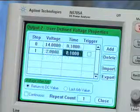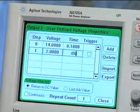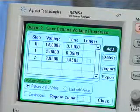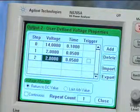Then, you press the Add button to add the next step. This step will be 2 volts for 50 milliseconds. You can continue to add steps manually up to 512 steps.